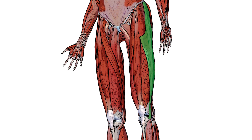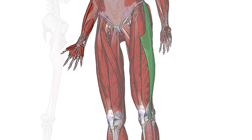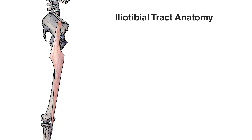Here you can see the iliotibial tract highlighted in green, and you can see how it's located in the lateral thigh, crossing both the hip joint and the knee joint as well. Let's swap to a different view so we can take a better look. Here we can see the iliotibial tract from a lateral view.